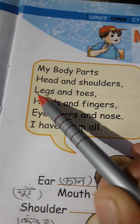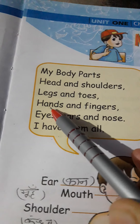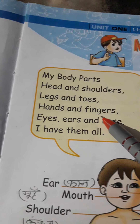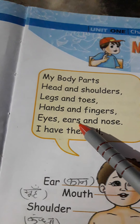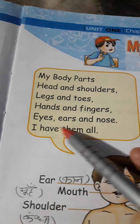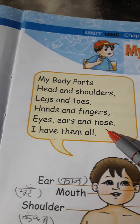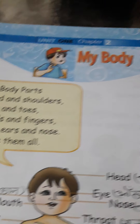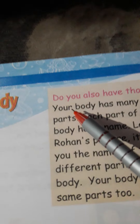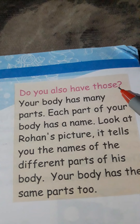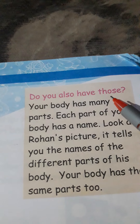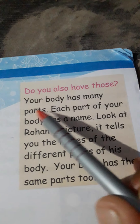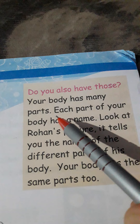My body parts: head and shoulders, legs and toes, hands and fingers, eyes, ears, and nose. I have them all — do you also have those? Your body has many parts.